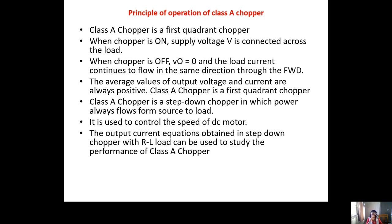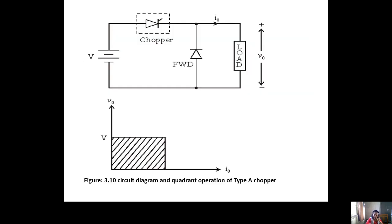Class A chopper is used to control the speed of a DC motor. The output current equation obtained in the step-down chopper with RL load can be used to study the performance of Class A chopper. The circuit diagram shows a first quadrant operation, so the output voltage and current I0 values will always be in positive mode.